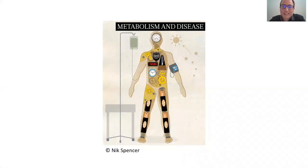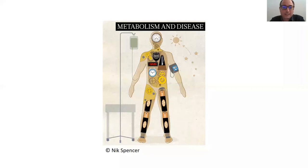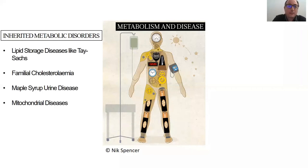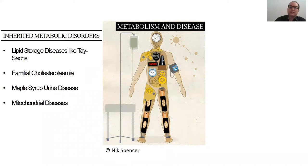The classical image of metabolism looks a little bit like this: metabolism provides the body with energy and building blocks so that it can run normally, and everything has to be well balanced not to get sick. There's good evidence supporting this — inherited metabolic disorders like lipid storage diseases, familial cholesterol, or other metabolic diseases like maple syrup urine disease or the facets of mitochondrial diseases. In these cases, something breaks and metabolism doesn't work like it should anymore.